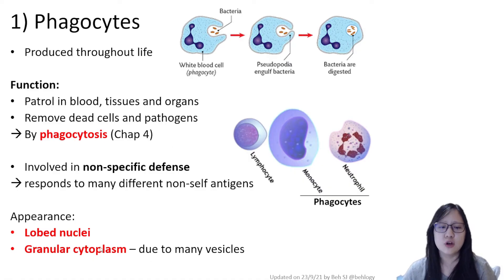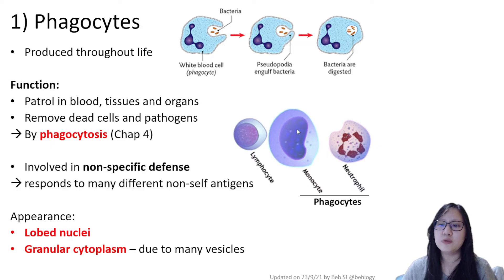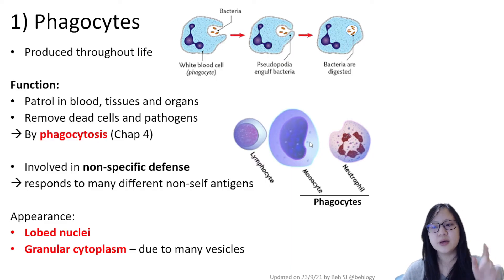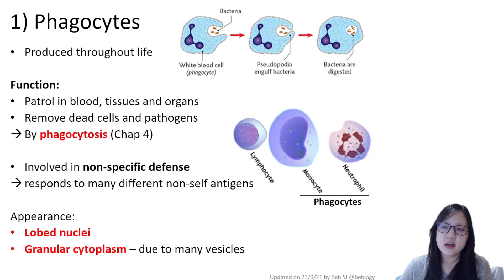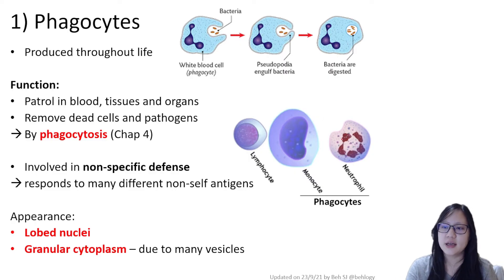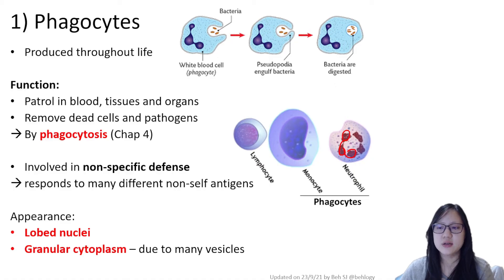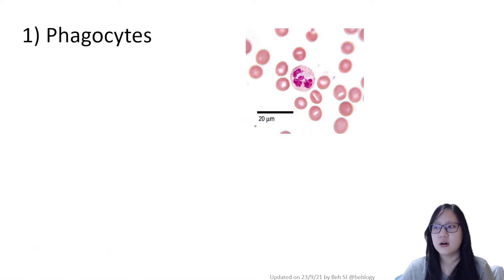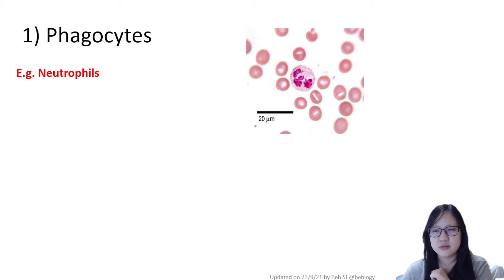There are actually two types of phagocytes and their lobed nuclei look different. The monocyte has a nucleus that is lobed but not circular, whereas the neutrophil has a multi-lobed nucleus with multiple lobes. Their appearance differs depending on the type of phagocyte.